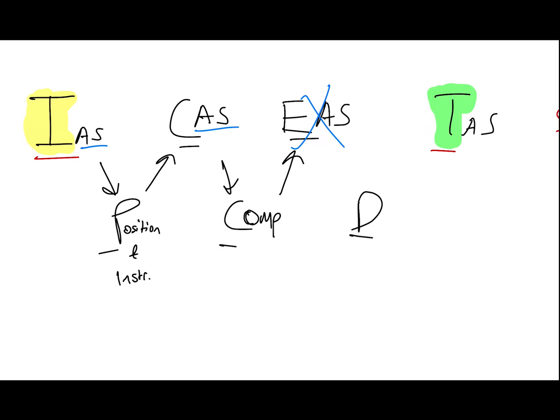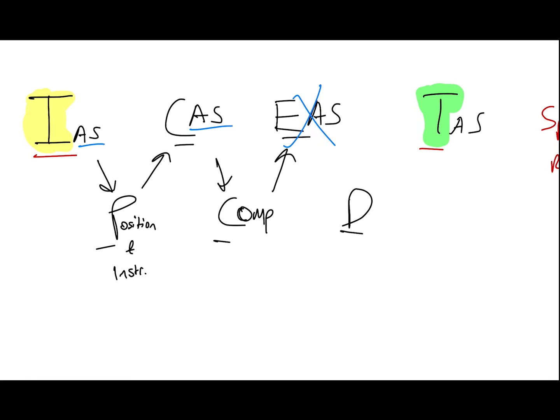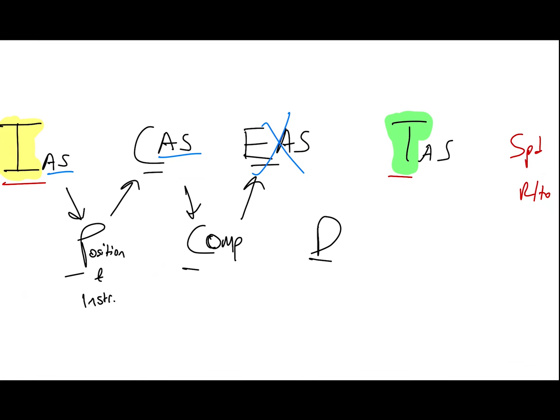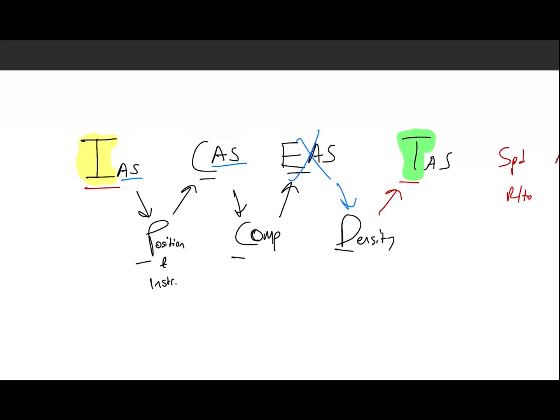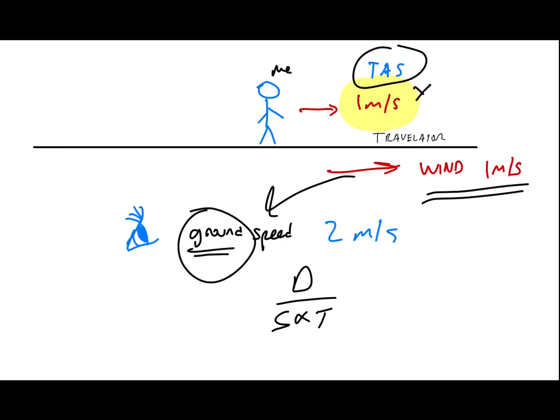The most important factor: the higher you go, the fewer air molecules there are and the less dense it is. That's what D stands for — density. After you factor in the density, you get your true airspeed: how fast the aircraft is moving relative to the mass of air around it. If the whole mass of air itself is moving, that's wind, and after you factor in wind you get your ground speed.